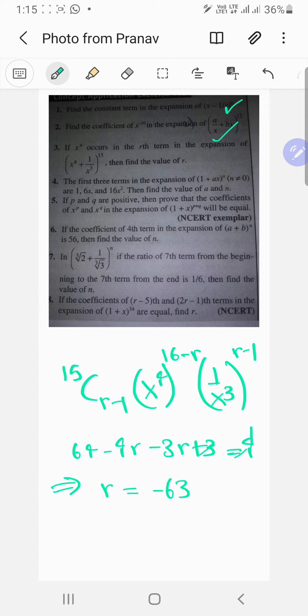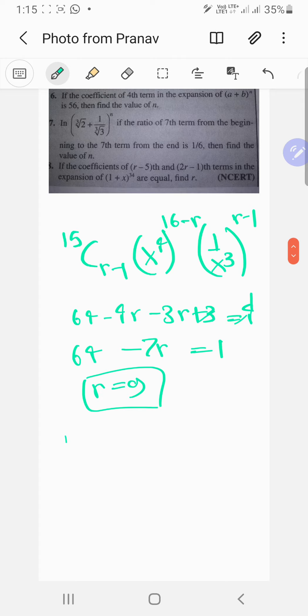So 64 minus 4r minus 3r... oops, sorry, I did something very incorrectly. It's gonna be minus 7r over there. So 64 minus 7r equals 1, so 7r equals 63, so r equals 9.